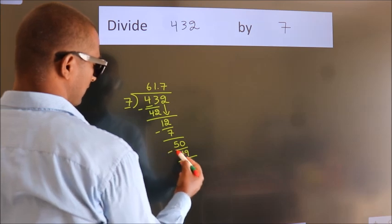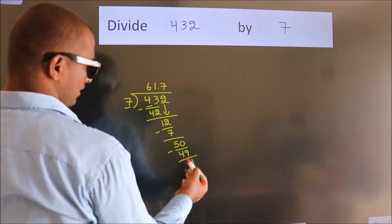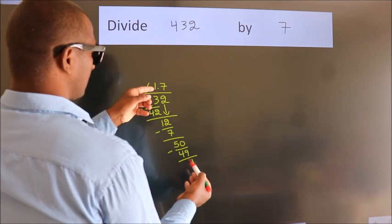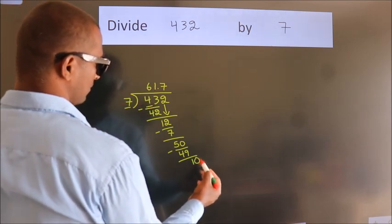Now we subtract. We get 1. After this, we already have the decimal, so directly take 0. So 10.